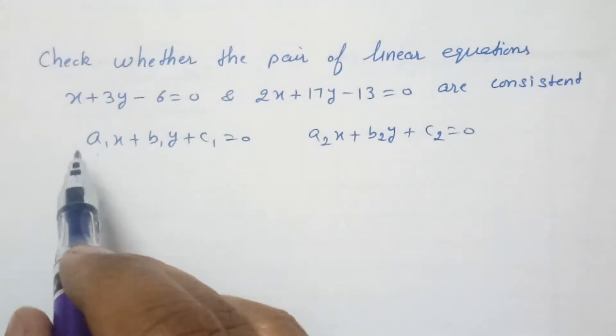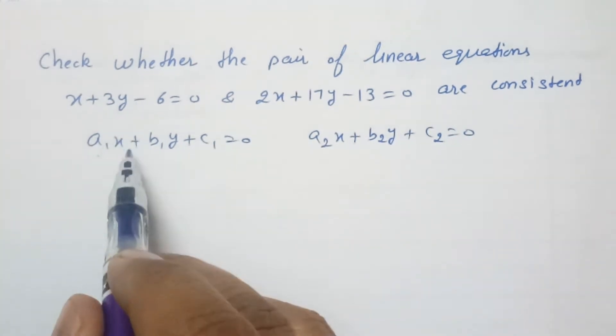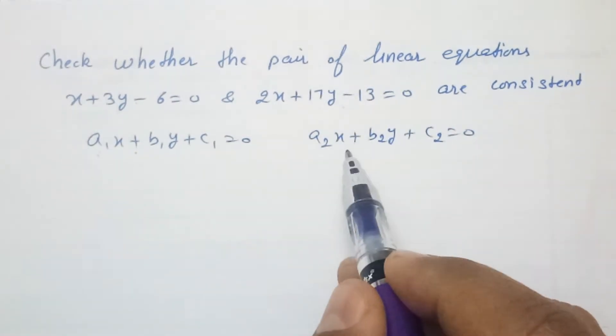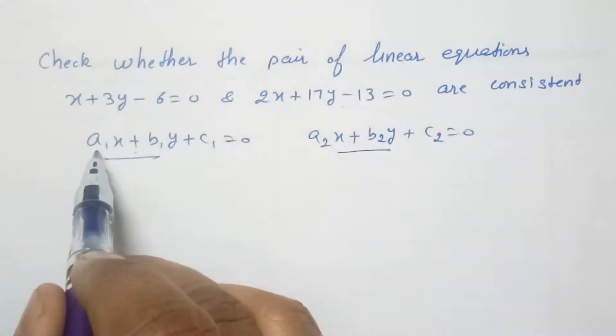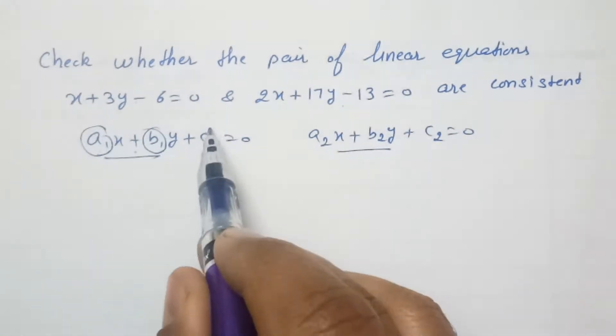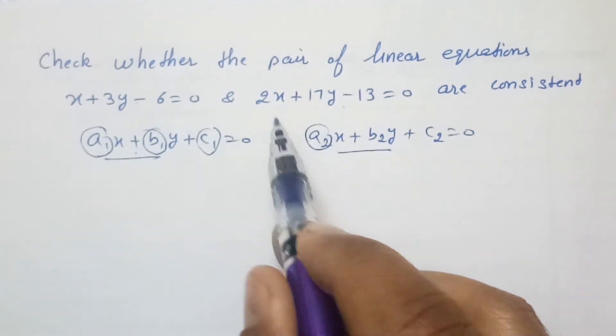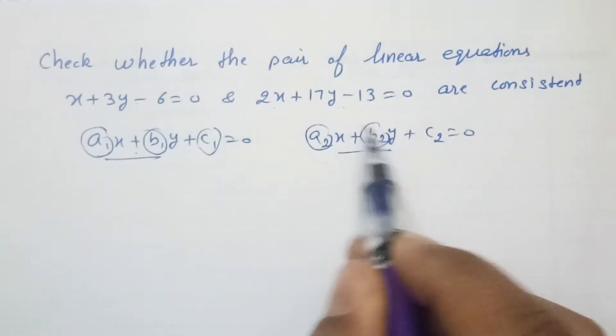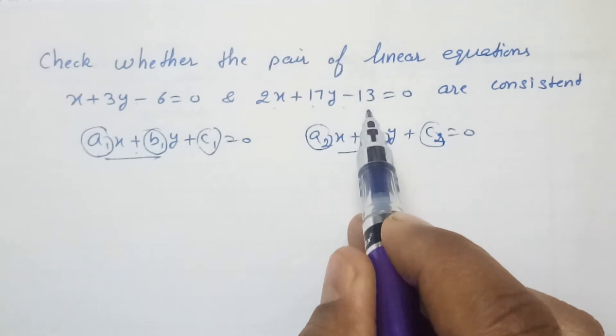So, when we compare these coefficients, this first equation with this equation and second equation with this second equation. This a1 is the coefficient of x, b1 is the coefficient of y, and c1 is the constant term. Here also, a2 is the coefficient of x, b2 is the coefficient of y, and c2 is the constant term.